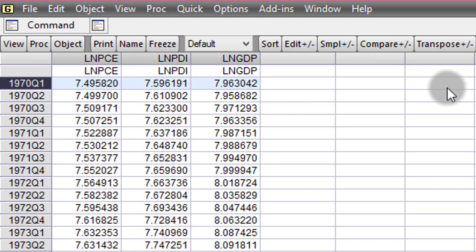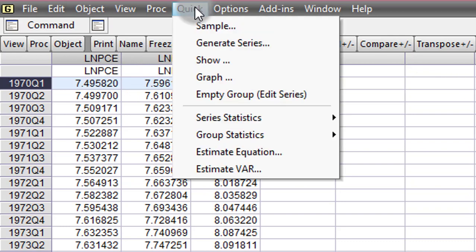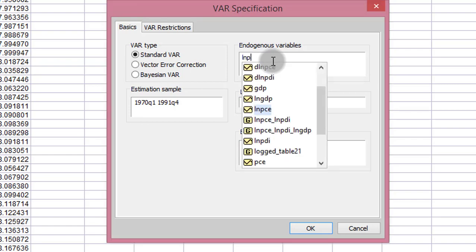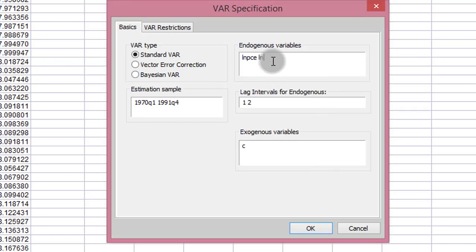To estimate the VAR model involving these three variables, we simply go to Quick, click on Estimate VAR. So here you can see that the standard VAR button is chosen by default. I leave it the way it is. In the endogenous variables column, I type in all the variables in the VAR system. Remember, there are no exogenous variables. All variables in the VAR model are simply endogenous.